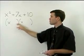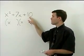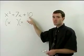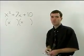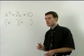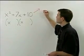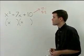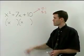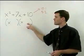The second term in each binomial will be a factor of your constant term, or your ten. The problem is ten factors in different ways. Ten can be thought of as ten times one, or it can also be thought of as five times two. So how do we know whether to use a ten and a one or a five and a two?